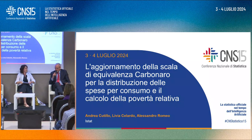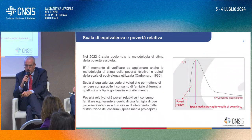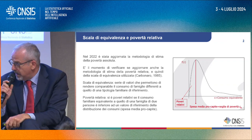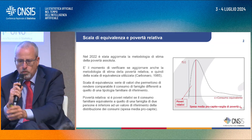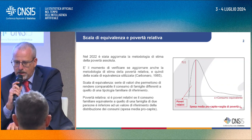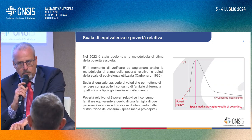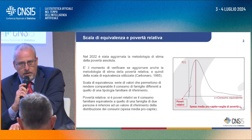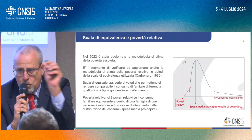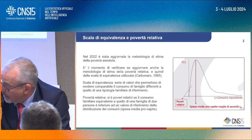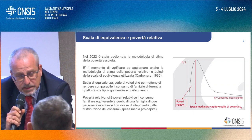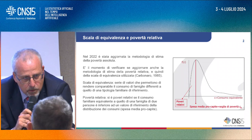Buongiorno a tutti. Questo lavoro preliminare, condotto insieme ai colleghi Livia Celardo e Alessandro Romeo, riguarda le ipotesi di revisione della scala Carbonaro, la scala di equivalenza utilizzata per i consumi in Istat. Una scala di equivalenza è una serie di valori che permettono di rendere comparabili i consumi di famiglie differenti rispetto a una famiglia di riferimento. Per Carbonaro, che ha costruito la nostra scala nel lontano 1985, la tipologia familiare di riferimento è una famiglia di due persone. Questa scala viene usata anche per la povertà relativa, dove il consumo familiare equivalente è inferiore alla soglia di spesa media pro capite.